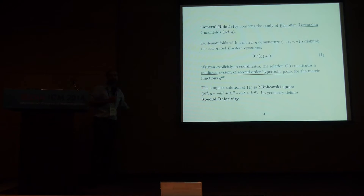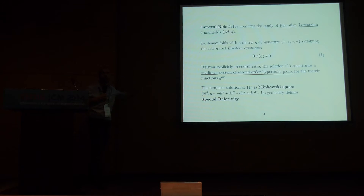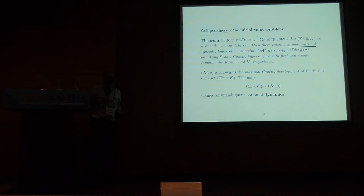The simplest explicit solution of these equations is Minkowski space. That's to say, the manifold is R^4 — sometimes we call it R^{3+1} in this context — and the metric, with coordinates T, X, Y, Z, is minus dT squared plus dX squared plus dY squared plus dZ squared. Of course, the geometry of this metric is precisely what defines special relativity as a theory. General relativity is Einstein's generalization of this geometry in order to include the physical phenomena of gravity. That's slide one of the introduction. Since we all do PDEs, we can all appreciate slide two.